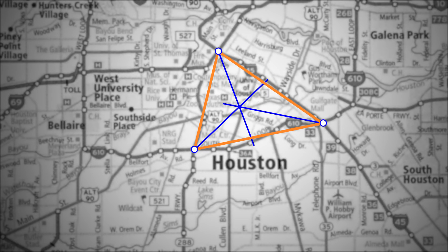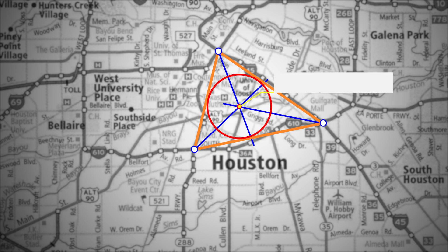Since all of these lines meet at this point, the point is the same perpendicular distance away from all three sides, or all three roadways. That's where the new shopping center should go. The intersection point is called the incenter of the triangle. Can you see why it's called that?